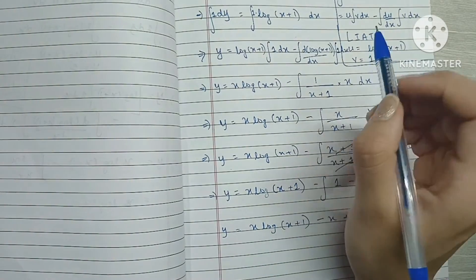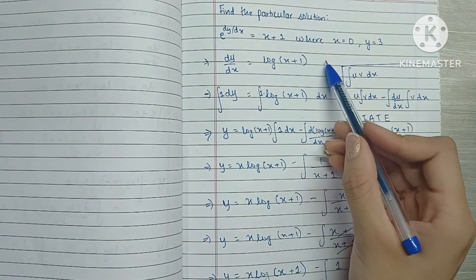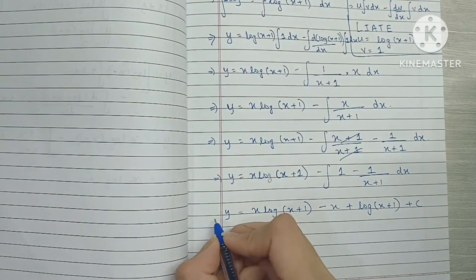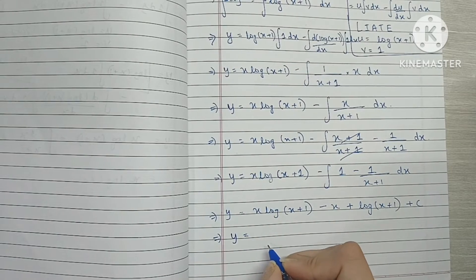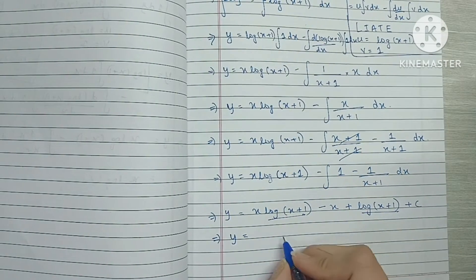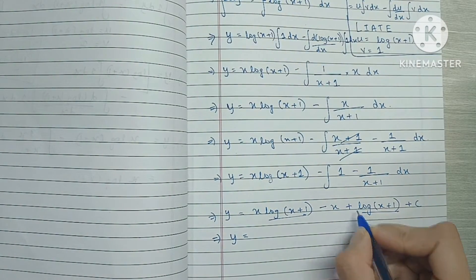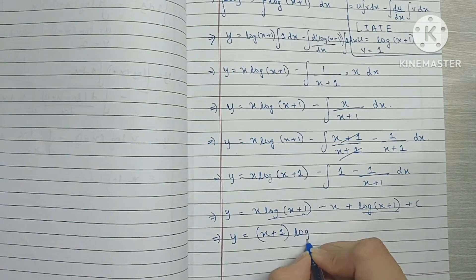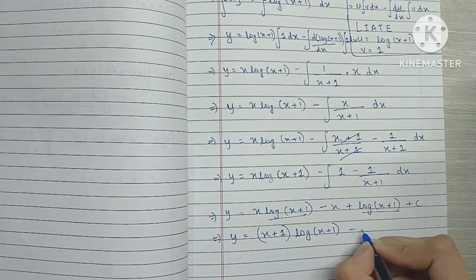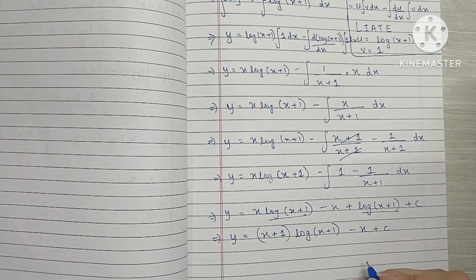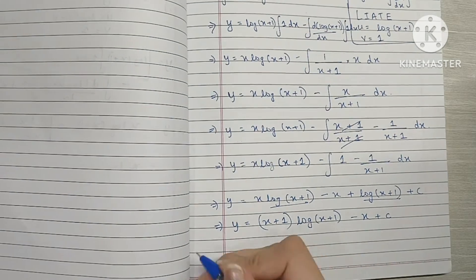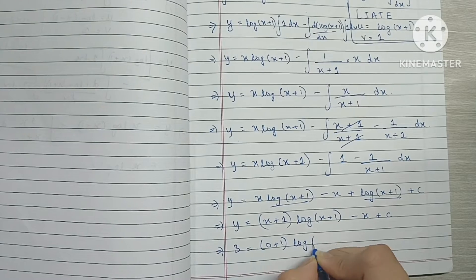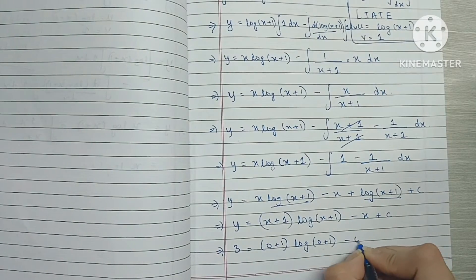Now we substitute the given values: x is equal to 0 and y is equal to 3. Before that, let's group our terms — x·log(x+1) and log(x+1) share log(x+1), with coefficients x and 1. So this becomes (x + 1)·log(x + 1) minus x plus c. Now substituting: 3 is equal to (0 + 1)·log(0 + 1) minus 0 plus c.